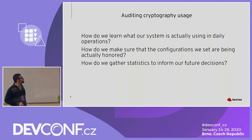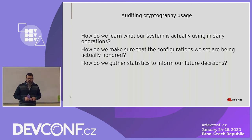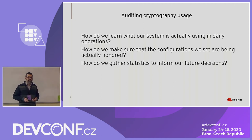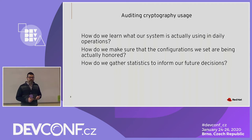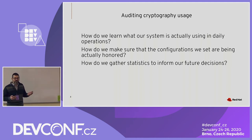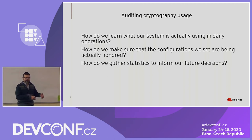So how do we learn what the system is actually using in operation? If I want to decide on a cryptographic policy to use in my company, how do I know what is actually going on — what ciphers are being used? How do I know that if I change the configuration, the system is actually doing what I tell it to do? Sometimes there will be bugs in the configuration or maybe even in the library. And how do I gather statistics so in the future I can change my decision?